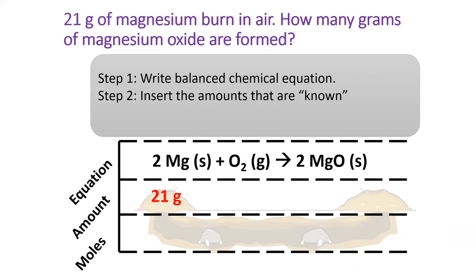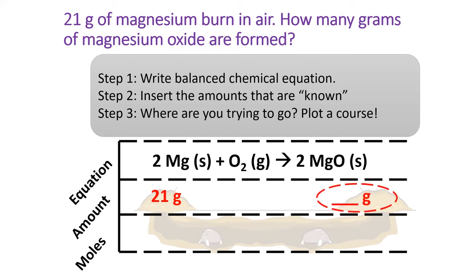Next, we will input any known amounts into the correct place on this diagram. For this problem, we have 21 grams of magnesium, which I put in line 2 underneath magnesium. Now we need to plot a course. The problem asks us to find grams of magnesium oxide, so I've circled the space underneath magnesium oxide in line 2.